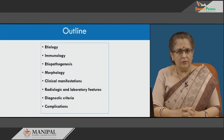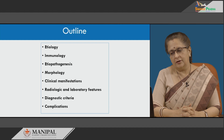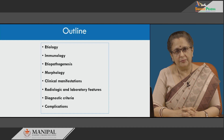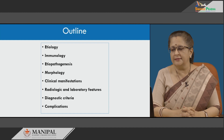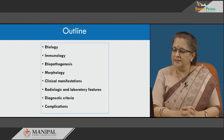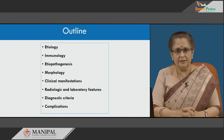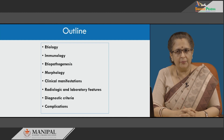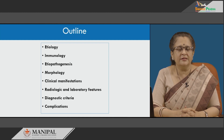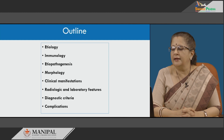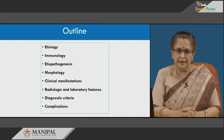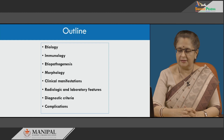To look at the pathological aspect of rheumatoid arthritis, we will proceed first with the etiological aspects, then immunology, etiopathogenesis, morphology, clinical manifestations, radiology and laboratory features, diagnostic criteria and complications.